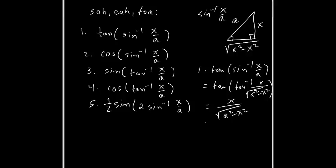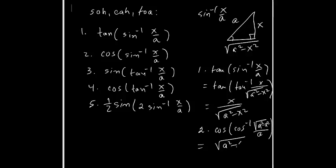For problem two, cosine of sine inverse x over a — again using this triangle, we convert the sine inverse to cosine inverse. Cosine inverse is adjacent over hypotenuse, so it becomes cosine inverse of √(a² - x²) over a. Then cosine and cosine inverse cancel out, giving √(a² - x²) over a.